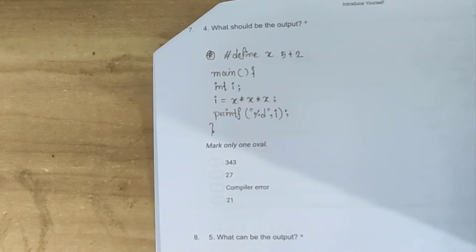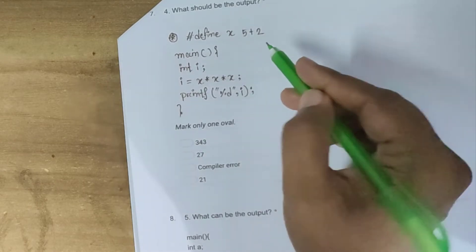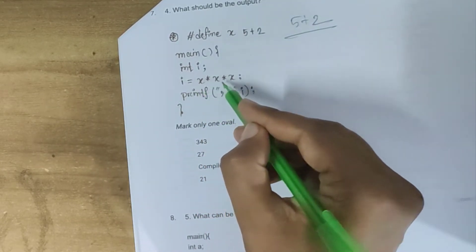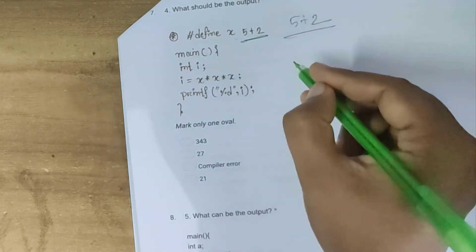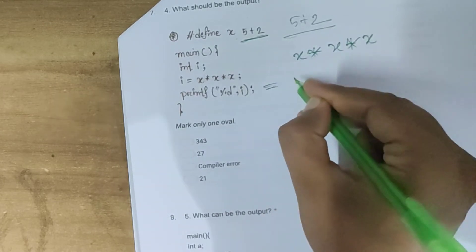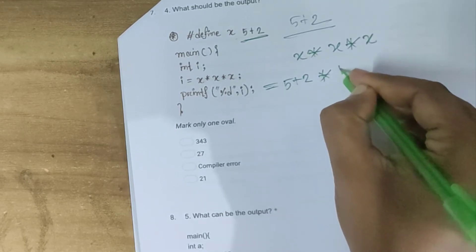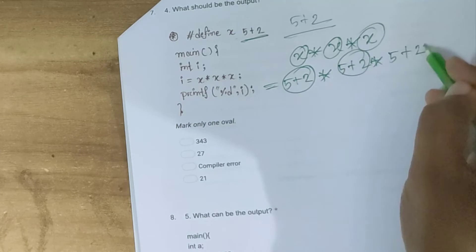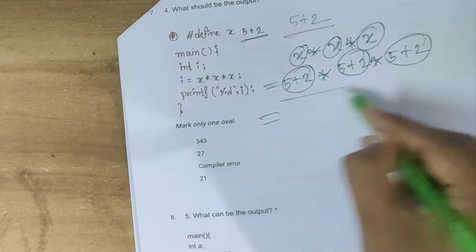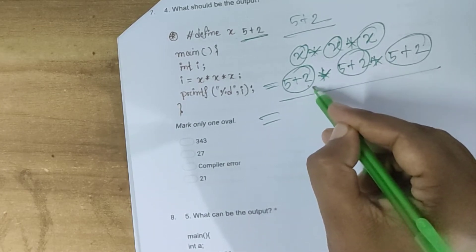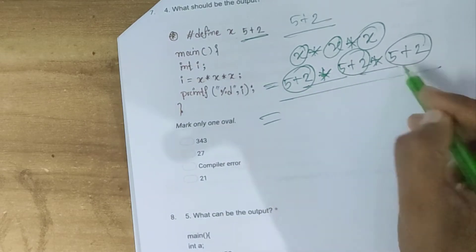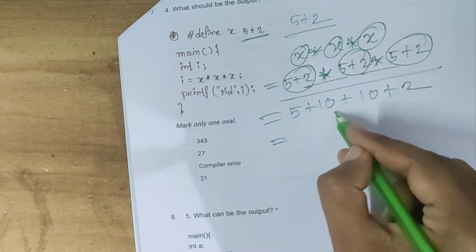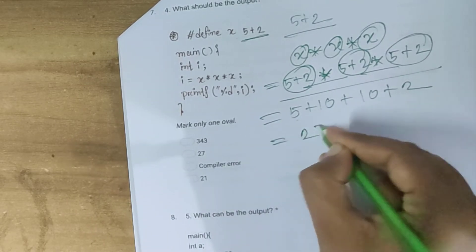So the print frame is available in the print frame. y equal to x into x into x, here equal to x here is the 5 plus 2, define x into x into x, and this is 5 plus 2 into 5 plus 2 into 5 plus 2 into 5 plus 2.